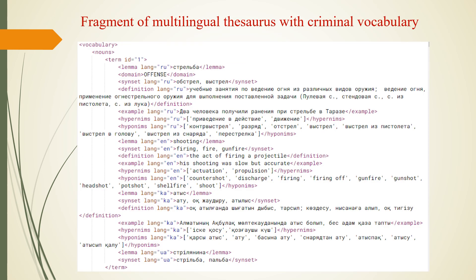The thesaurus currently includes about 600 main words: approximately 330 nouns, about 107 adjectives, and 168 verbs.